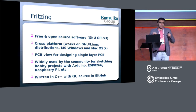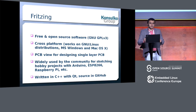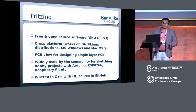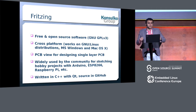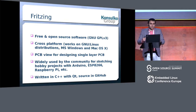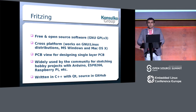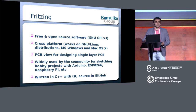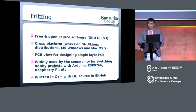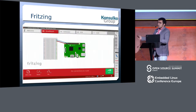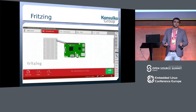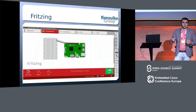Fritzing is made for kids — it's really simple. It's free and open source software available under GPL version 3, cross-platform, works on Linux, Windows, and Mac. It's widely used by the community for making sketches, which is its main purpose. You can also design single-layer, very simple printed circuit boards. It's written in C++ with Qt and the source code is on GitHub — if you want to contribute, just create a pull request. The Qt framework is what makes it cross-platform.